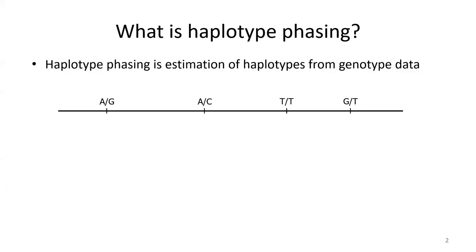A line represents a section of a chromosome, or it could be a whole chromosome, and we have four sites that have genotypes. The genotypes are just pairs of alleles listed on the slide. Those alleles were inherited from a mother and a father as sequences of alleles from each parent. Genotype phasing, sometimes called haplotype phasing, uses statistical methods to estimate what those sequences of alleles were that were inherited from each parent.